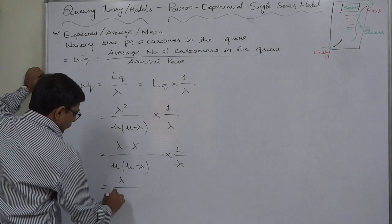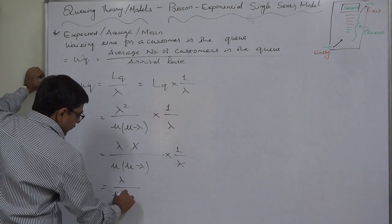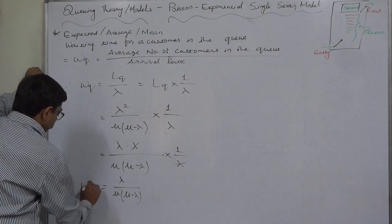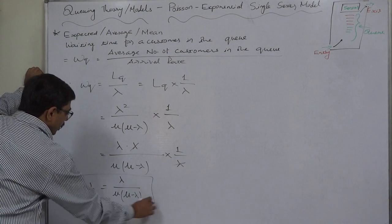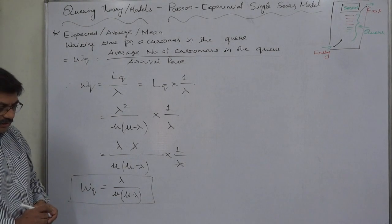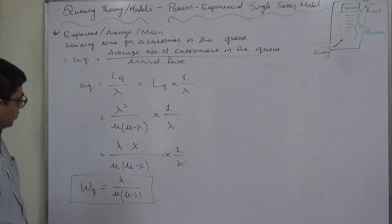Ultimately, the formula becomes lambda over mu times mu minus lambda. This is the formula for WQ, the average waiting time for a customer in the queue.